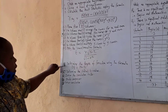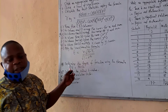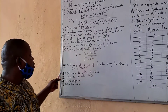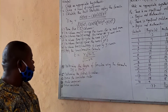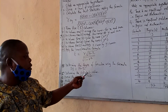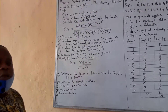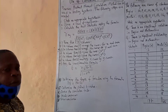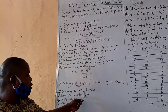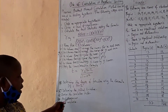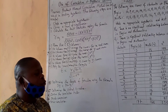Step four is to determine the degree of freedom. For the Pearson Product Moment Correlation method, the degree of freedom is n minus 2. Step five is to determine the critical t-value, which you can find using your statistics textbook. Step six: draw the calculation table. Step seven: make a comparison. Step eight: draw a conclusion.